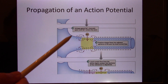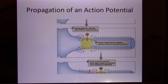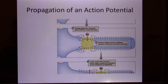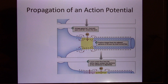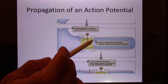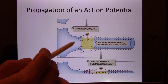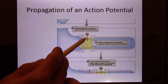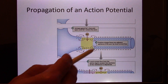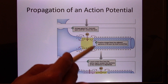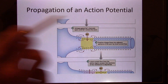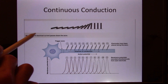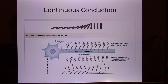The action potential starts at the axon hillock, and all along the axon are voltage-gated sodium and potassium channels. This is why neurons use so much ATP — every millisecond they are cycling through this process. When the action potential at the axon hillock generates enough voltage to open the neighboring channels, the action potential moves forward. This sequential propagation is called continuous conduction, traveling all the way down to the axon terminal.